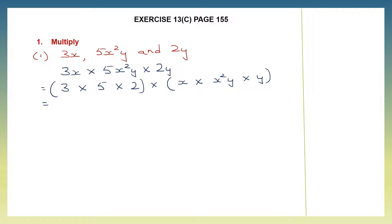Let's multiply: 3 fives are 15, 15 twos are 30. Now let's multiply x first. x here is to the power of 1 and we have x to the power of 2 there. So x into x squared is x to the power of 3 — we add the powers. Then y: y to the power of 1 here and 1 there, so when you add it up it becomes y squared.